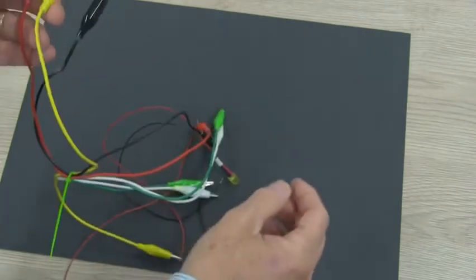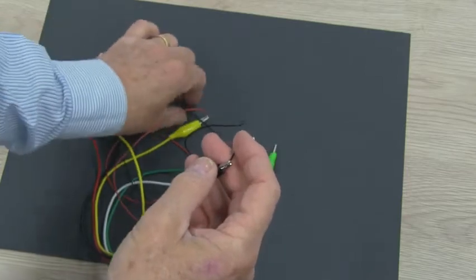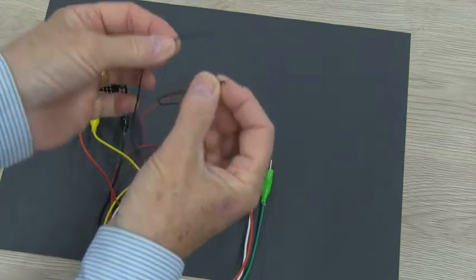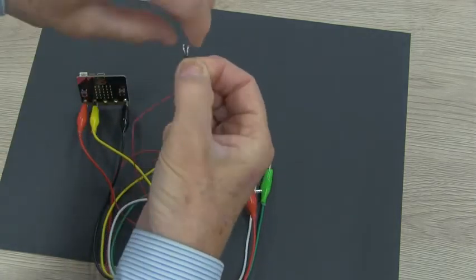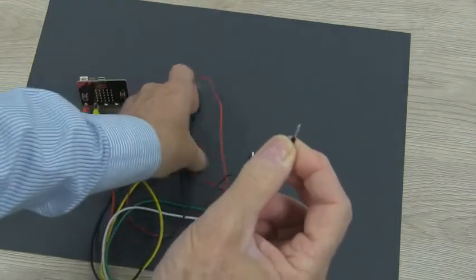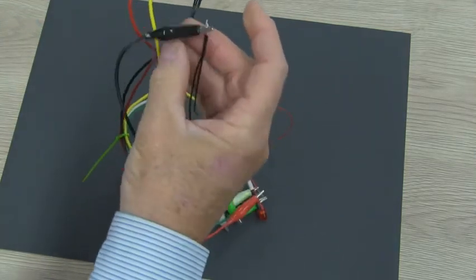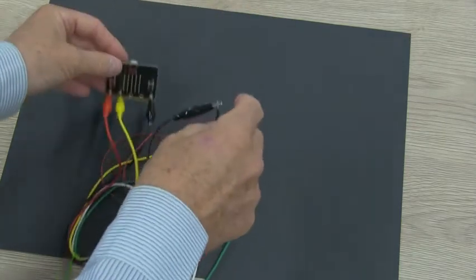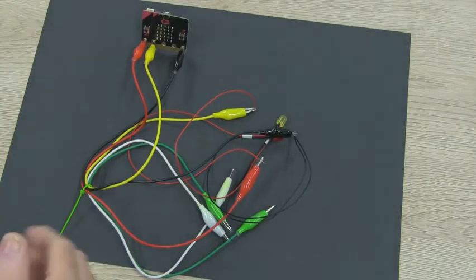You can see we can start building them up. Now, we've got a problem here, because the black lead is already in use. So, what we can do then, is we can take our black leads, our negative leads from the red and the yellow, and I tend to do a little half twist like that, just to make them more secure. And then, we can connect both of them to ground with a black cable. So, now, effectively, both our LEDs are connected to ground. And you can put a third one on, and so on. So, that's how you would connect LEDs to the microbit.